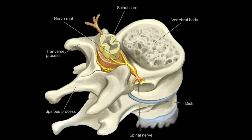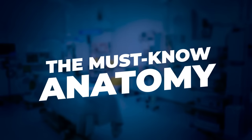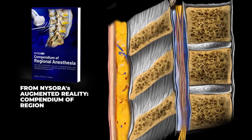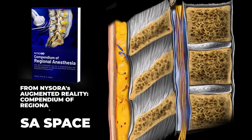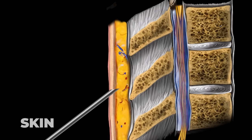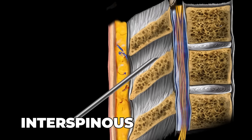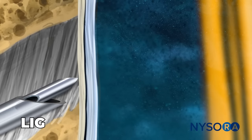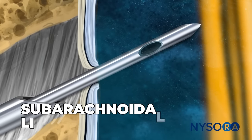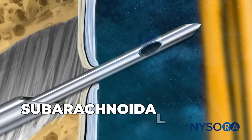Let's quickly review the anatomical structures the needle passes through when performing a midline approach to spinal anesthesia or lumbar puncture, using NYSORA's augmented reality animation. The needle first goes through the skin, then through the subcutaneous tissue, then through the supraspinous ligament, then through the interspinous ligament, ligamentum flavum, and finally the subarachnoid space once it passes through the dura.